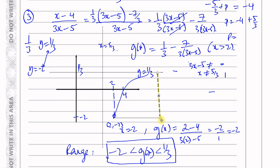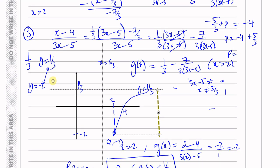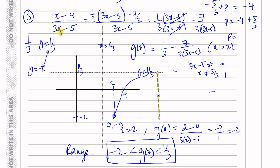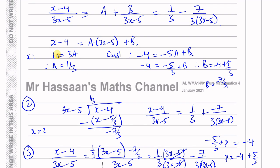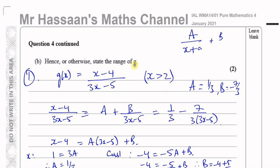The range of the function is all the values of y it can take. Once you understand what we've done, in an exam you could quickly say: y equals 1 third is one asymptote, and putting x equals 2 — the start of the domain — gives the minimum y value, letting you state the range directly. This question was only worth two marks, but there are other ways to find the range of a function. I wanted you to have a feel for how to approach such questions. And with that, we've finished question number four.